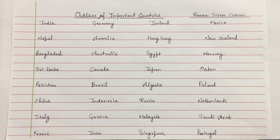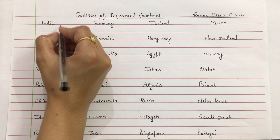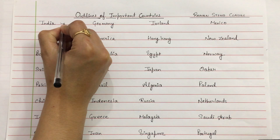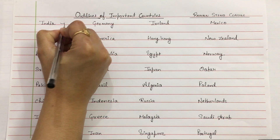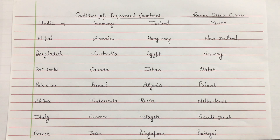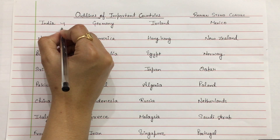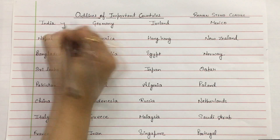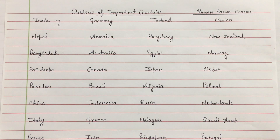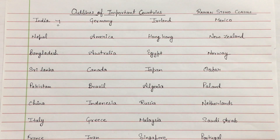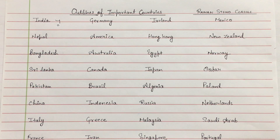Firstly, India — how do you write it? You have to focus on the nouns written in any paragraph. In writing, you can draw a double line like this always, so you don't have confusion between nouns and normal outlines.